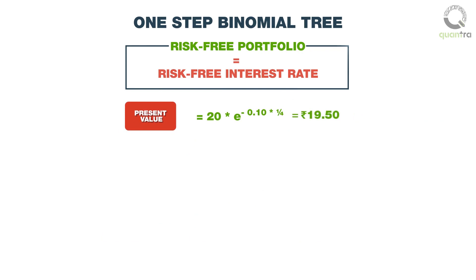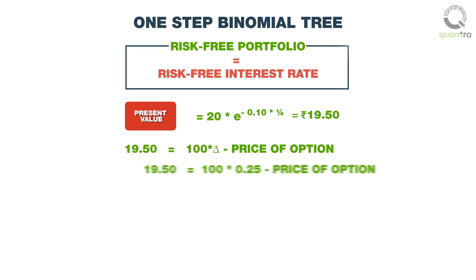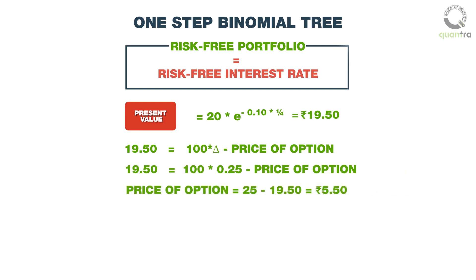Next, substituting this value in the equation we had constructed, we get 19.50, which is equal to 100 multiplied by 0.25 minus the price of the option. By rearranging, we can compute the price of the option as 25 minus 19.50, that is 5 rupees and 50 paise.